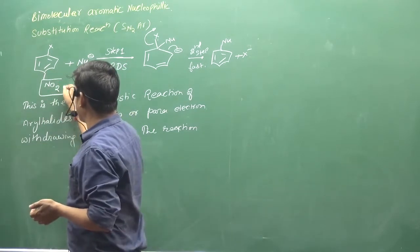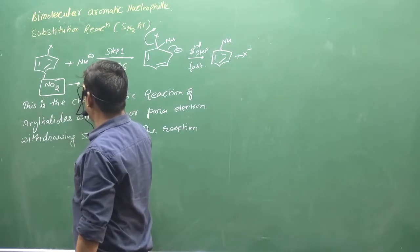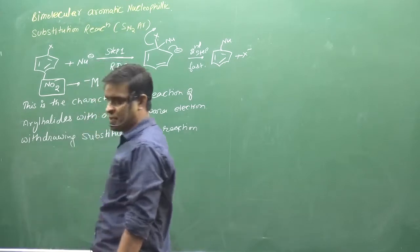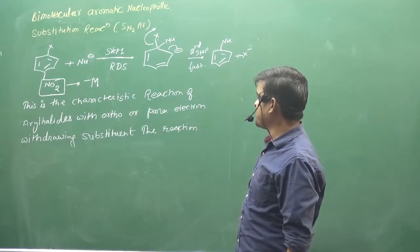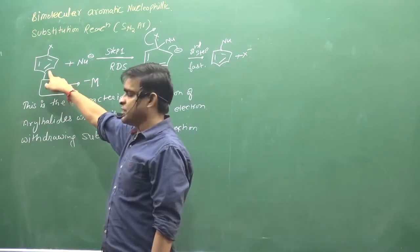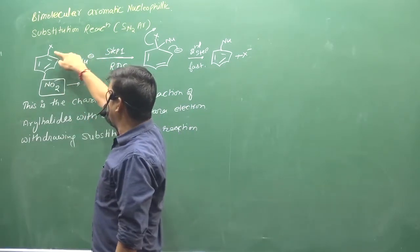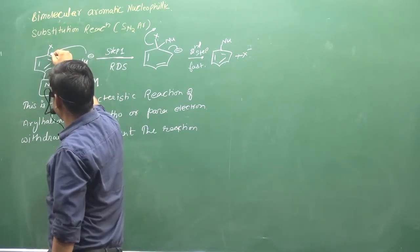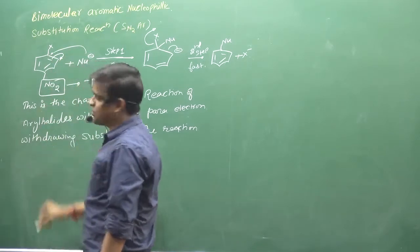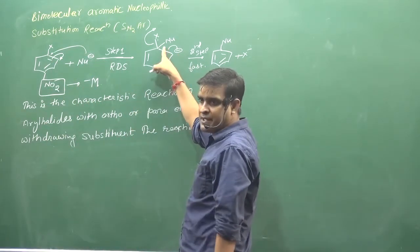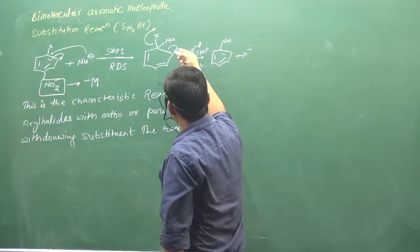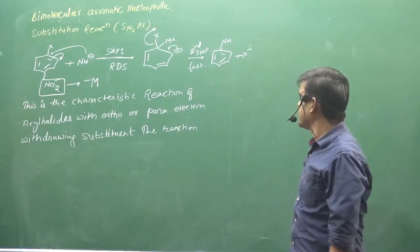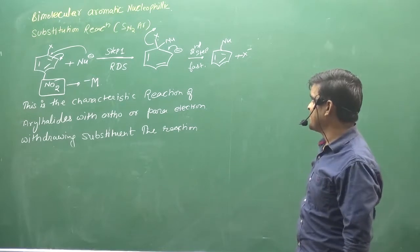NO2 is a strong electron withdrawing group. Why is it in the electron withdrawing group? Because it shows a minus M effect. So this electron withdrawing group, because of its effect on benzene, the electron density will decrease. Now the nucleophile is attacking. The nucleophile will attack here and this bond will shift - so here the nucleophile will attack and the leaving group will leave.